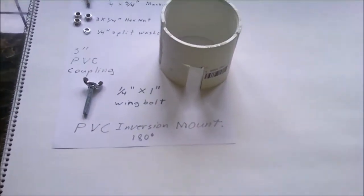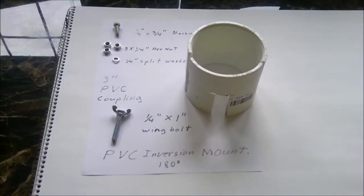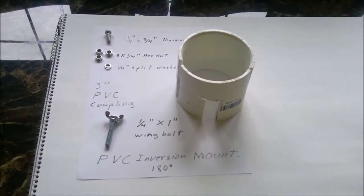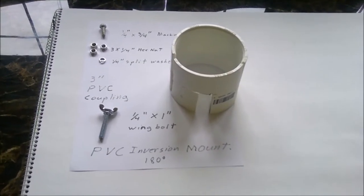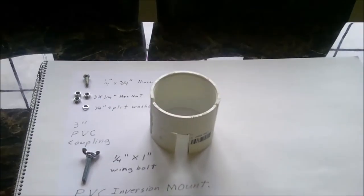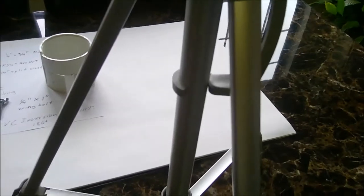What we're going to do is create a PVC inversion mount that turns the camera 180 degrees around so that it can be in front of you and you'll get the right point of view when you're filming without having to be working around your tripod.